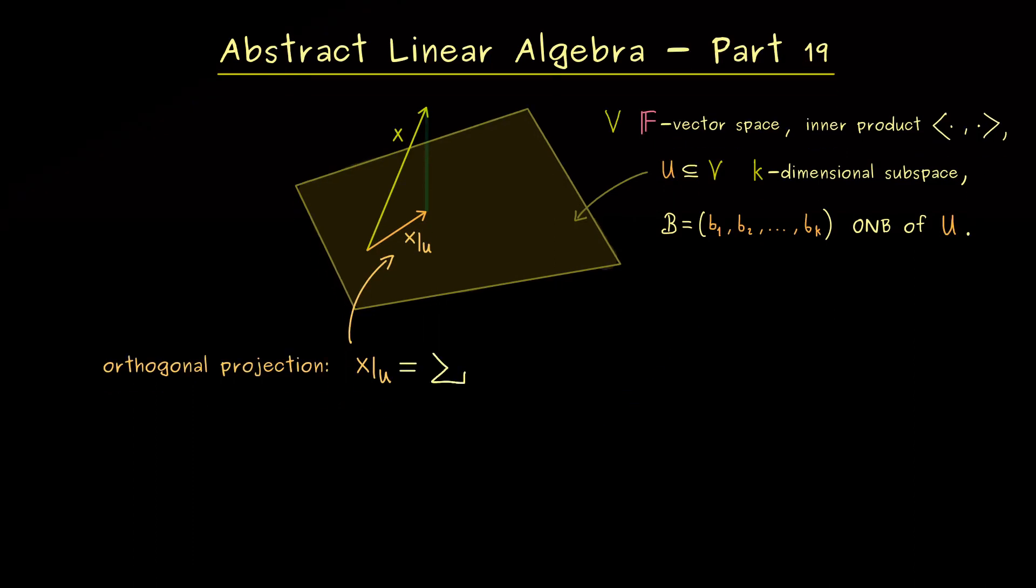Indeed the formula here is really compact in that case. Namely we just need a sum from 1 to k, and then we just have the vector bj together with the inner product bj with x. In other words, in order to find the orthogonal projection we just have to calculate these coefficients here. In fact, these are just scalars in our field F, and therefore this is a common linear combination just written in a non-standard way.